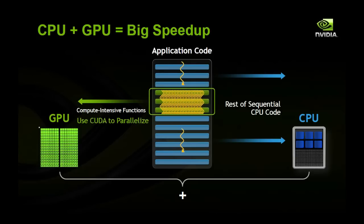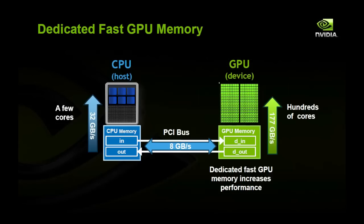The GPU has very dedicated fast GPU memory, which goes up to 177 gigabytes a second on our current best hardware. Similarly, a CPU has about 32 gigabytes a second, so you can see there can be a huge bandwidth advantage for using a GPU. In addition, the GPU has hundreds of cores where the CPU only has a few. These two are connected together by the PCI Express bus, which gets about 8 gigabytes a second. Because of this, we need dedicated memory, so our variables will be allocated directly on the GPU and transferred there explicitly.